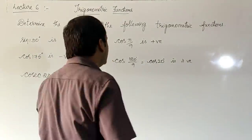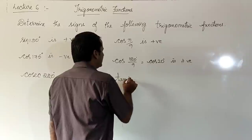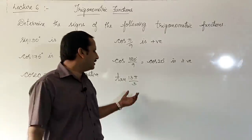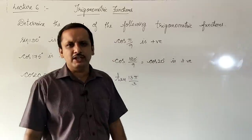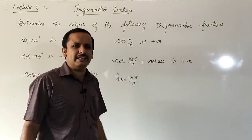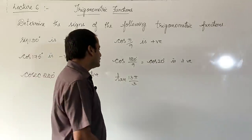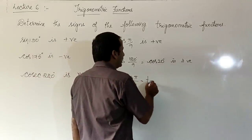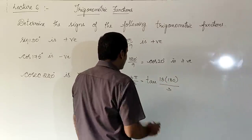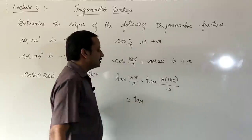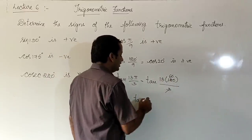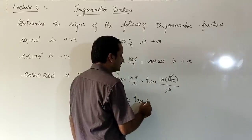Next: tan 13π/3. I will convert it into degrees because that is somewhat easier to understand. Writing π as 180 degrees divided by 3 gives tan of 13 × 60, which is 780 degrees.